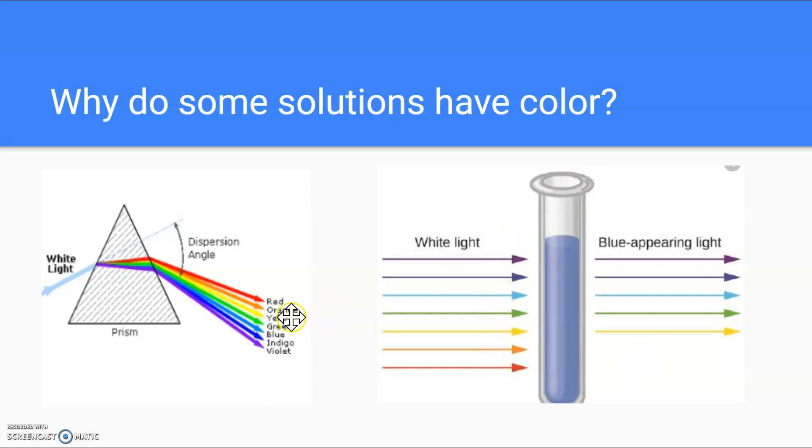So why do some solutions have a color and some solutions are clear? Well, solutions that have a color actually absorb one of these lights. And when it absorbs, then you see everything except the color that was absorbed. So if I have a blue solution, and I shine white light which has all of these colors, it will absorb actually in the red and orange range. And the resulting color that I see is blue. So these will combine together to give me a blue color.